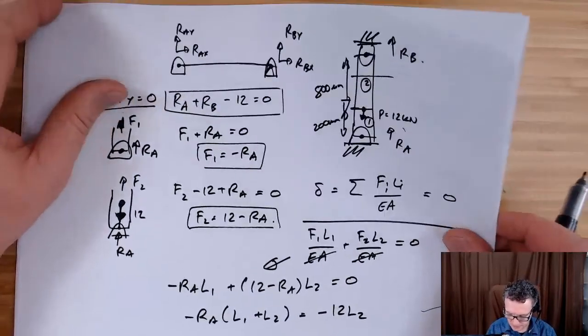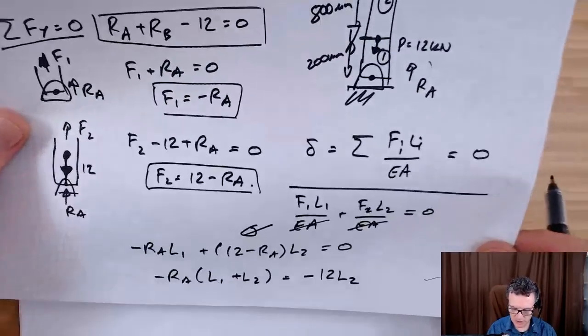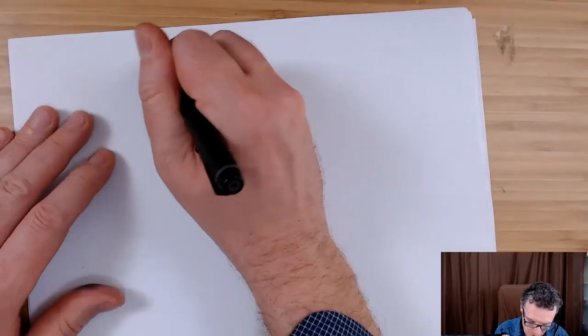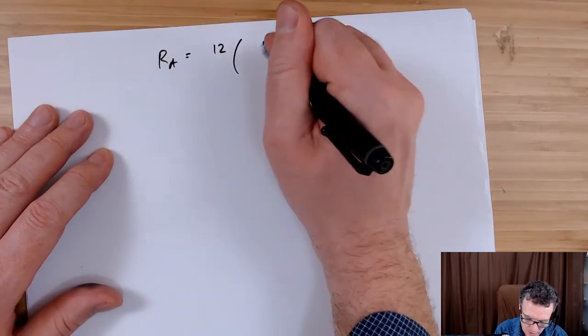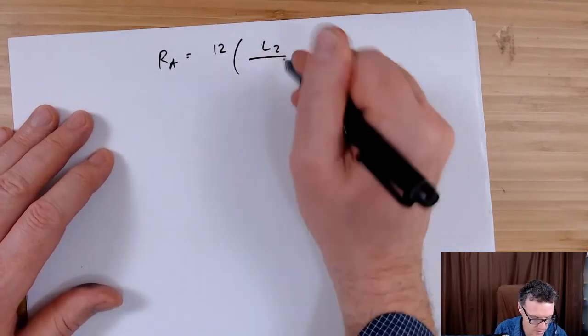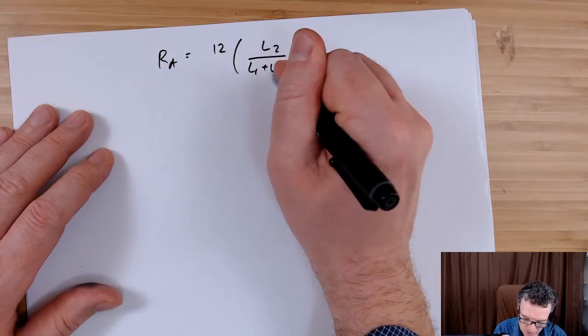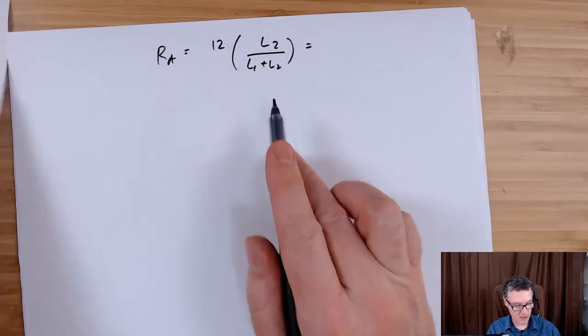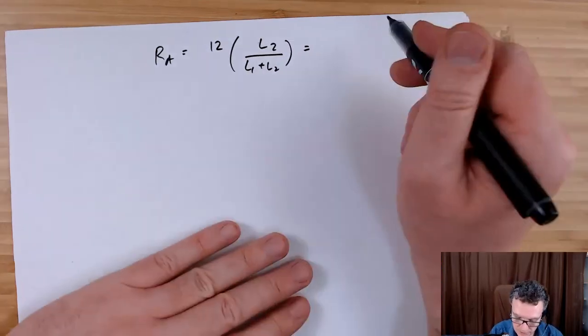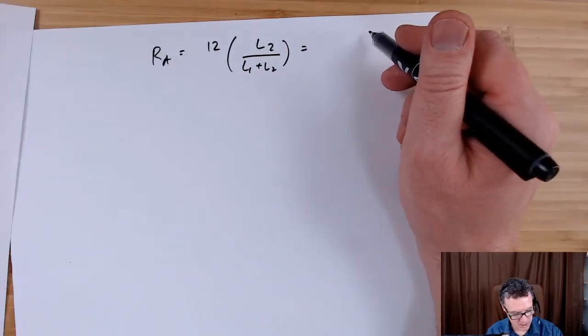Right, so substituting my numbers, then I can find out what Ra is going to be. So I'm going to have Ra equals 12, get rid of the minus signs, L2 over L1 plus L2.